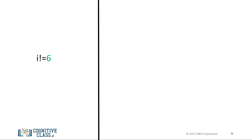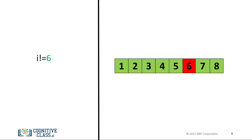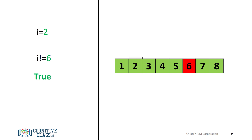The inequality test uses an exclamation mark preceding the equal sign. If two operands are not equal, then the condition becomes true. We can use a number line — when the condition is true, the corresponding numbers are marked in green, and red for where the condition is false. If we set i equal to 2, the operator is true, as 2 is not equal to 6.